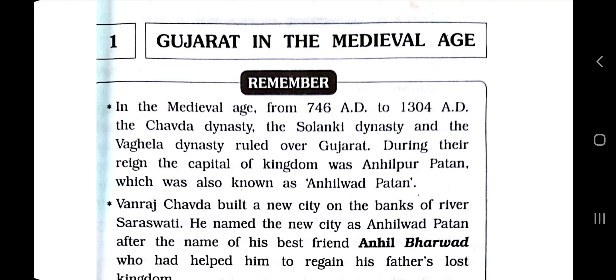From 746 AD to 1304 AD — AD meaning Anno Domini — during that time period, different dynasties ruled in Gujarat. They are named as the Chauda dynasty, the Solanki dynasty, and the Vagela dynasty. During the reign of these kingdoms, the capital was Anilpur Patan, which was later known as Anilwad Patan.